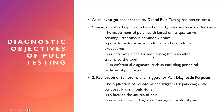Pulp testing is also used as a follow-up for monitoring the pulp after trauma to the teeth, and in differential diagnosis, such as excluding periapical pathosis of pulpal origin. For example, if a patient comes in with an abscess, we use electric pulp testing to diagnose whether it is a periodontal abscess or one of pulpal origin. If it is of pulpal origin, there will be no response to electric pulp testing, because abscess forms once the pulp is completely necrosed.